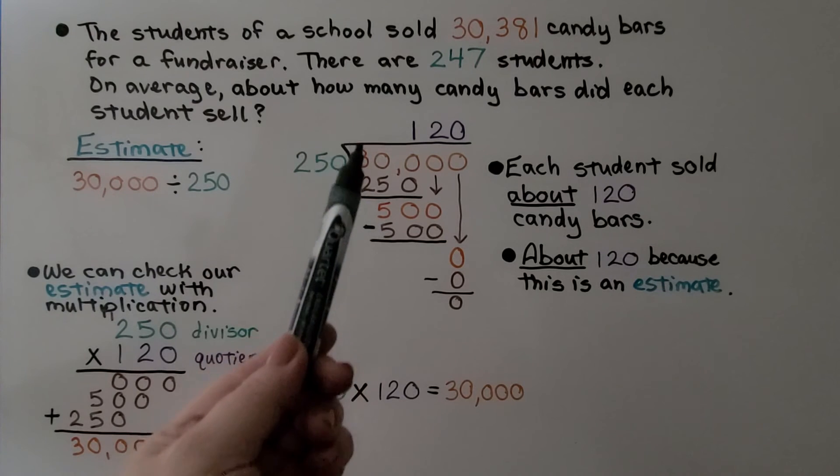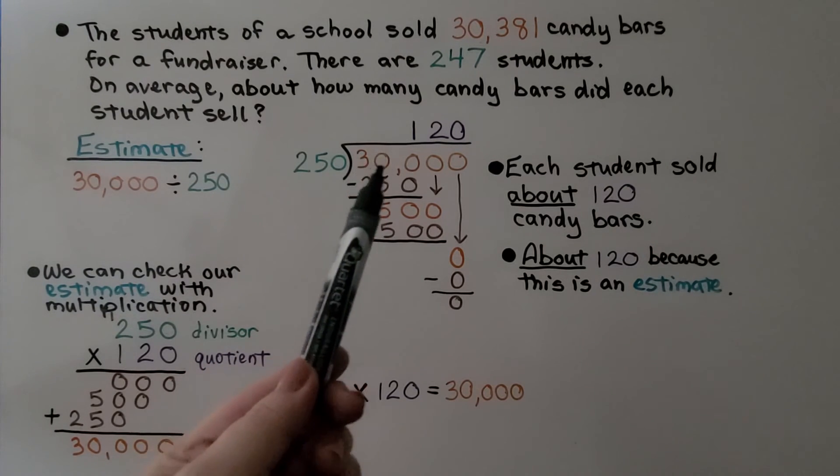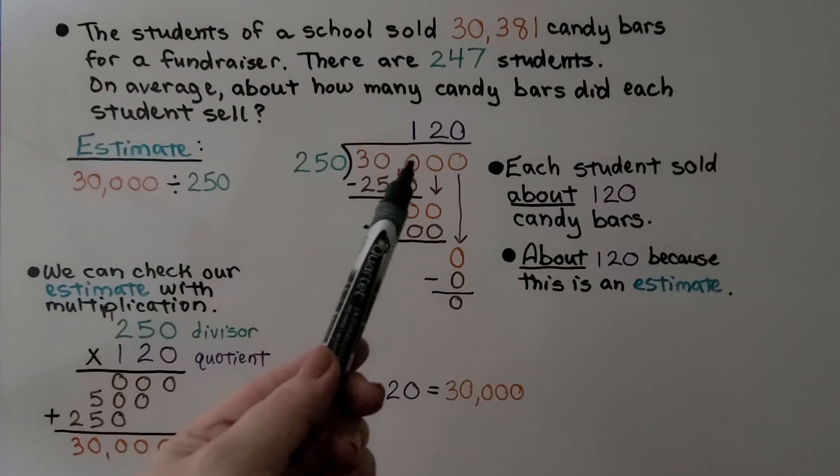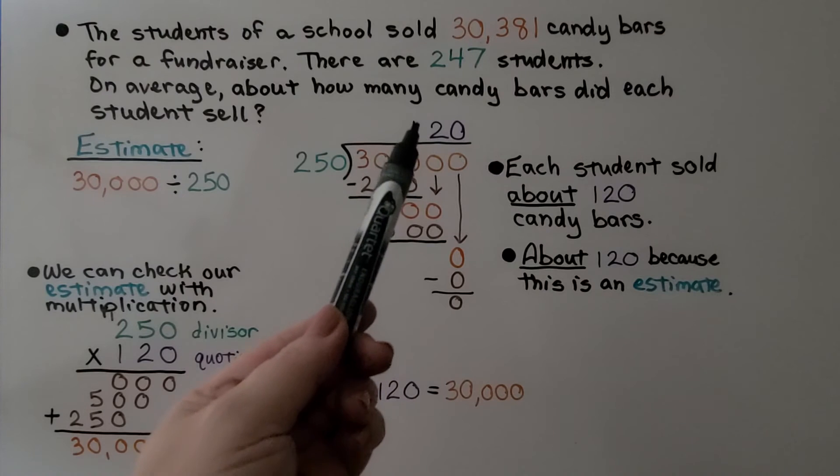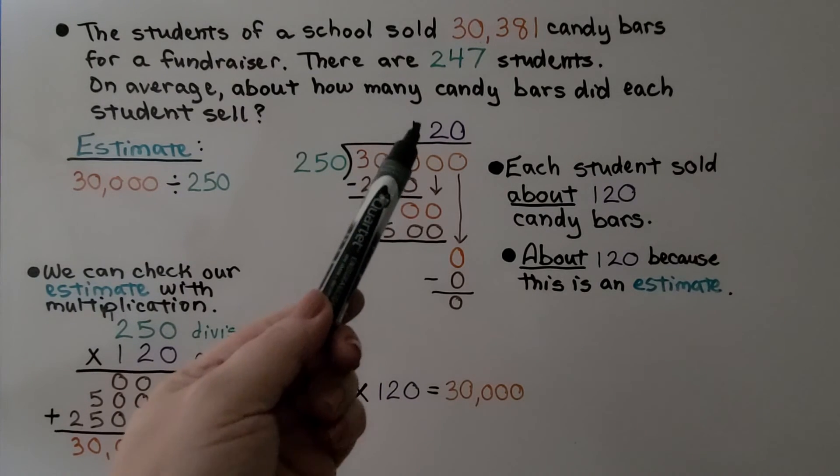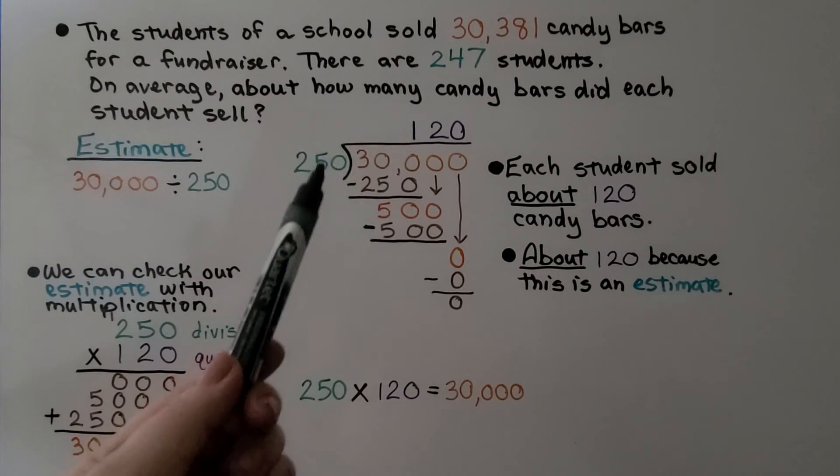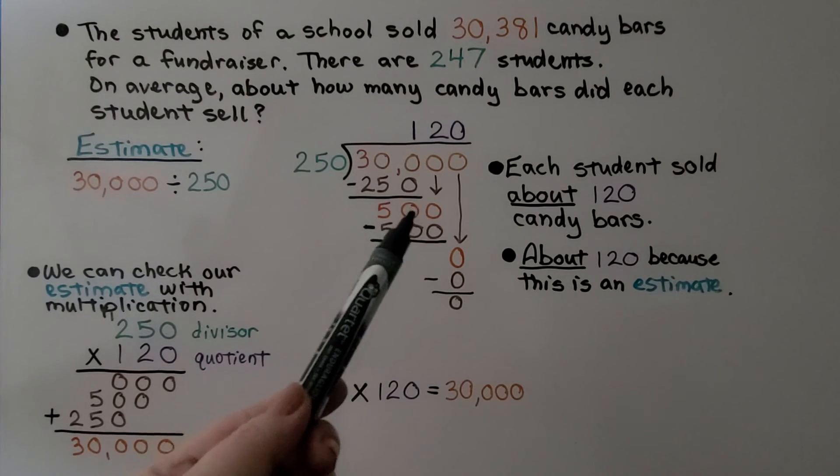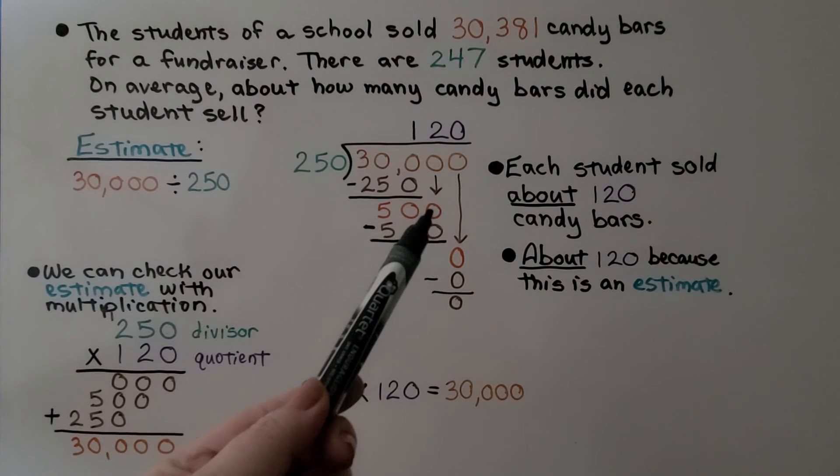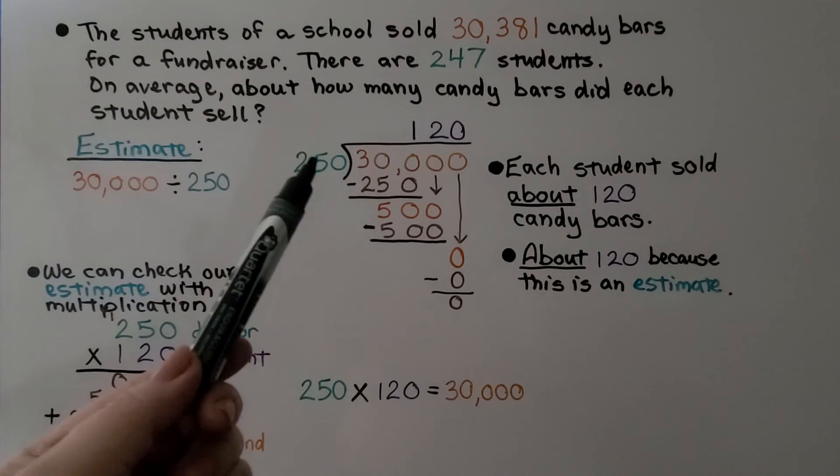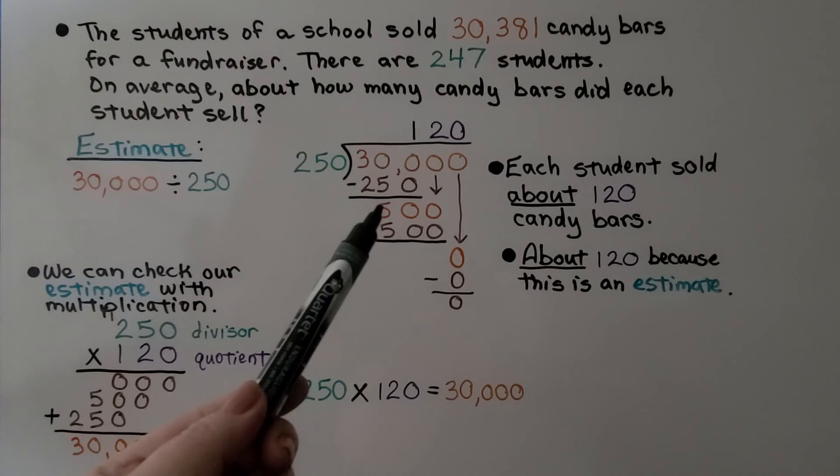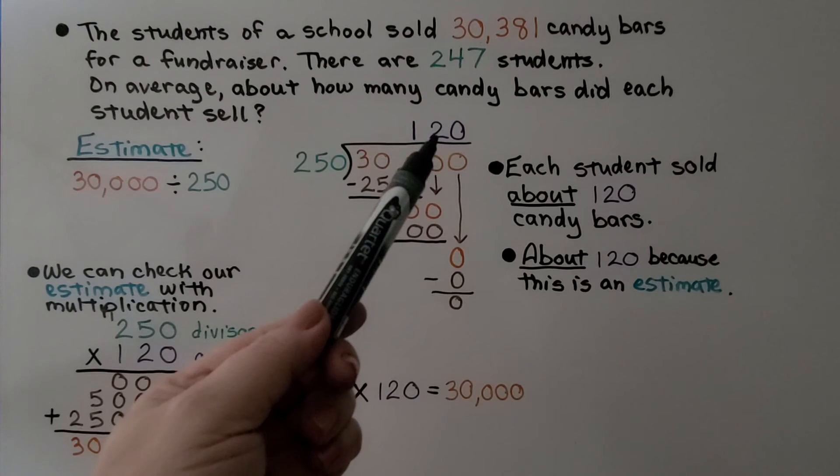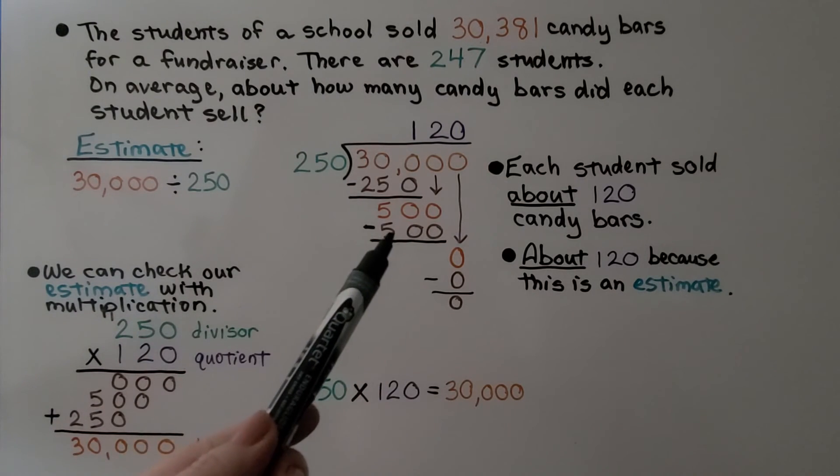It can't fit into the 3, so we don't put anything here for the quotient. It doesn't fit into 30, so we don't put anything above the 0, but 250 can fit into 300 one time, so we put a 1 above this 0 and do 250 times 1, which is 250. We subtract, we get 50, and now it's this 0's turn to come down. Now we have a 500. How many times can 250 fit into 500?